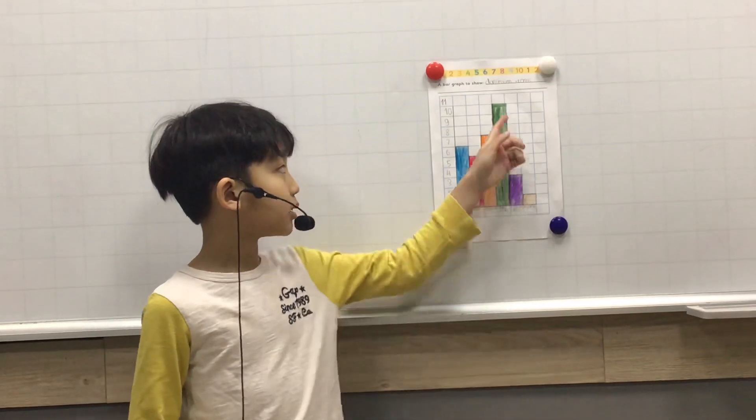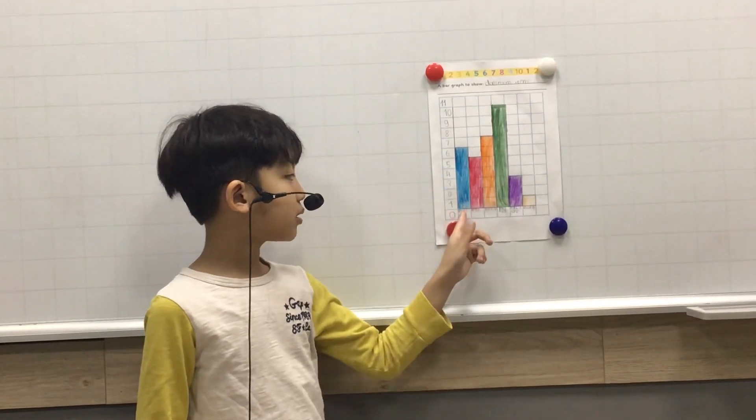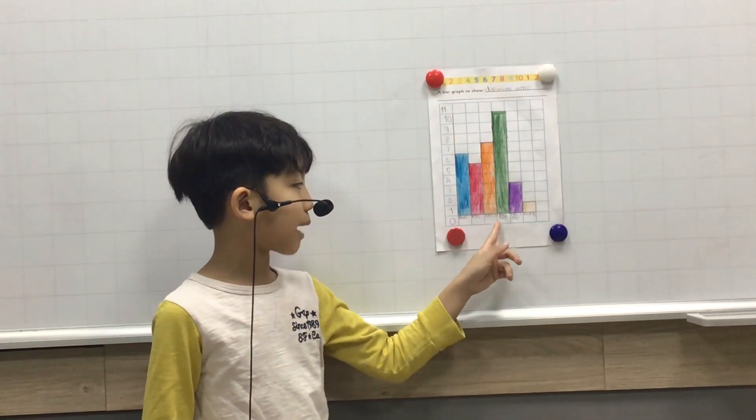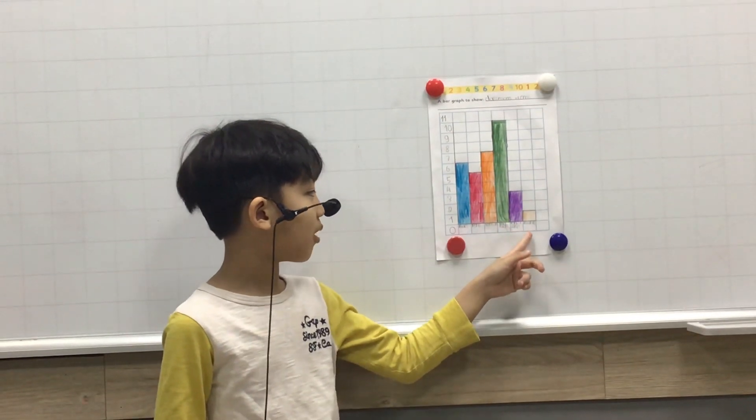The bar graph shows the classroom items. There are books, pens, pencils, backpacks, pencil cases, and more.